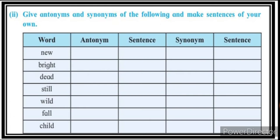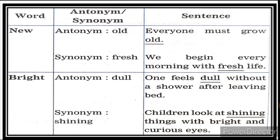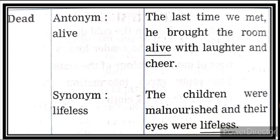Antonyms and synonyms with sentences: 'New' — antonym: old; synonym: fresh. Everyone must grow old; we begin every morning with fresh life. 'Bright' — antonym: dull; synonym: shining. One feels dull without a shower; children look at shining things with bright and curious eyes. 'Dead' — antonym: alive; synonym: lifeless. The last time we met, he brought the room alive with laughter. The children were malnourished and their eyes were lifeless.